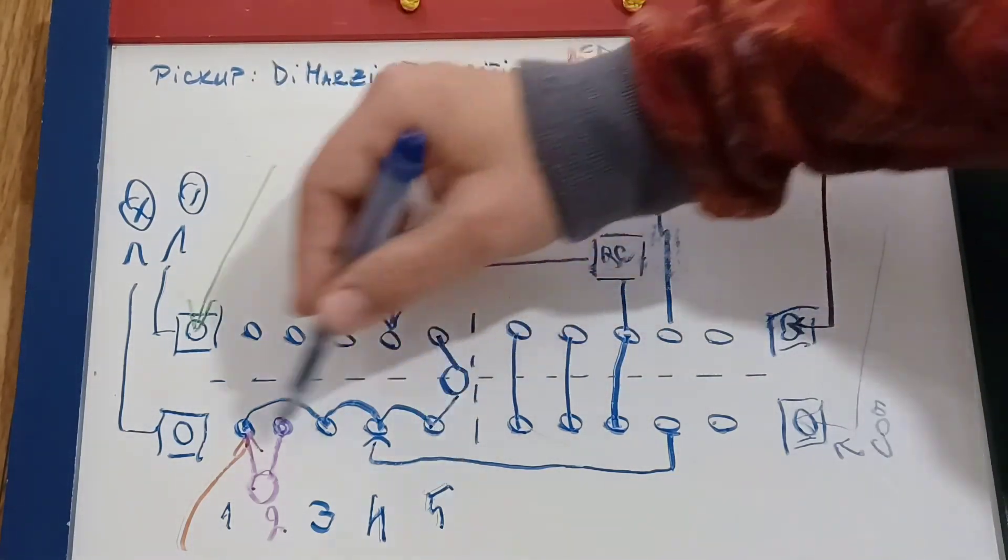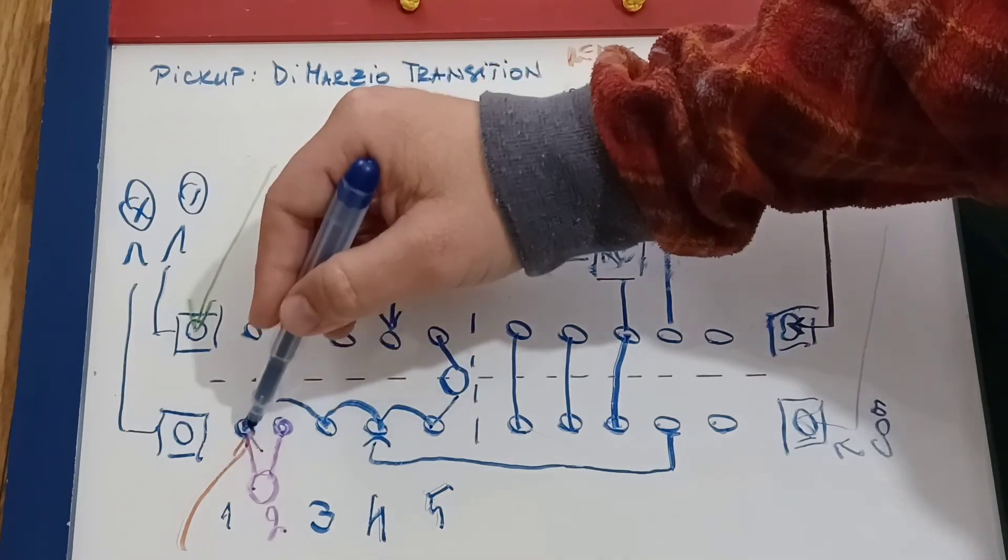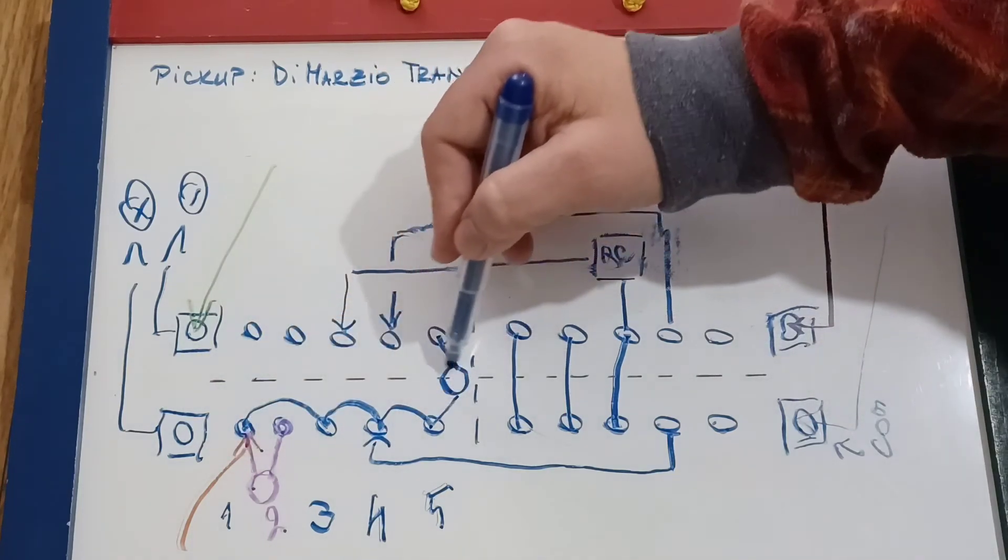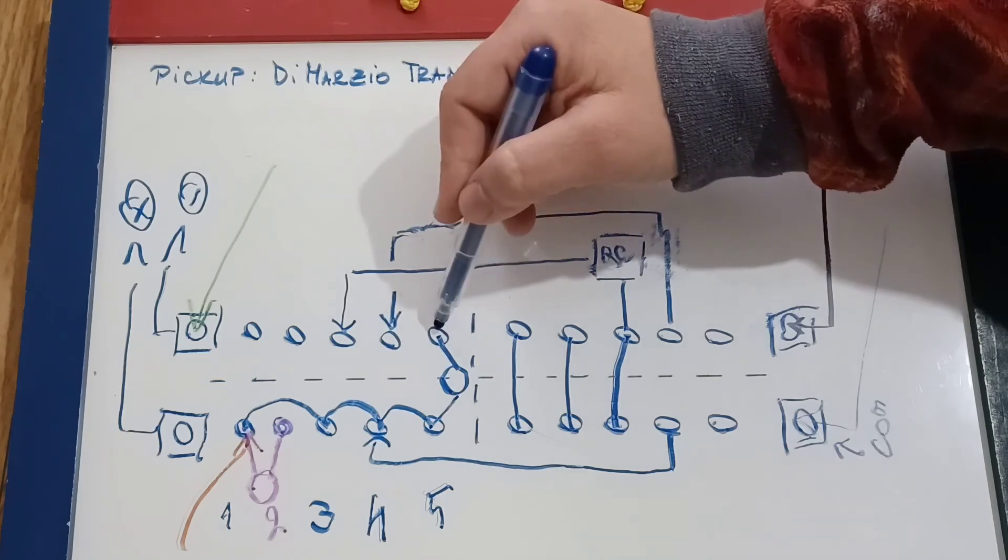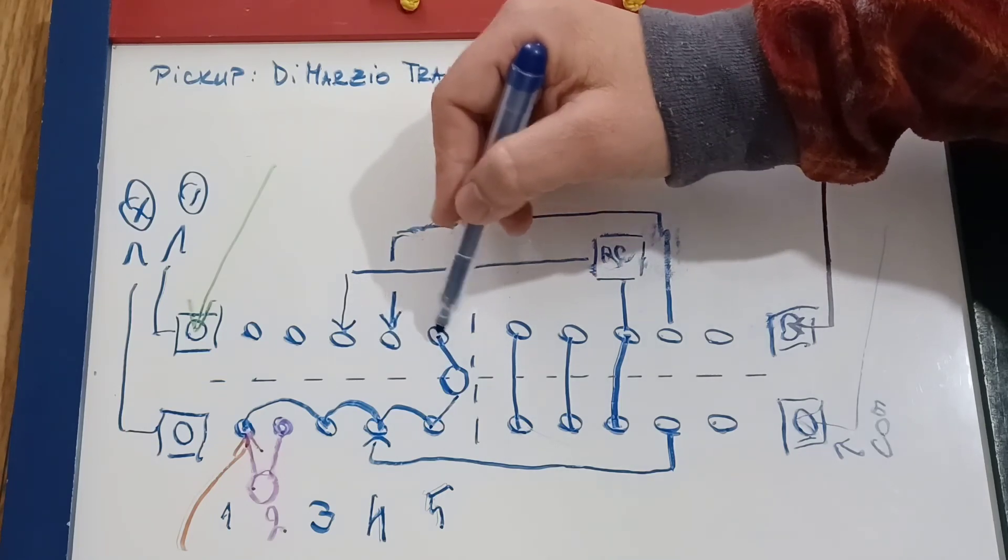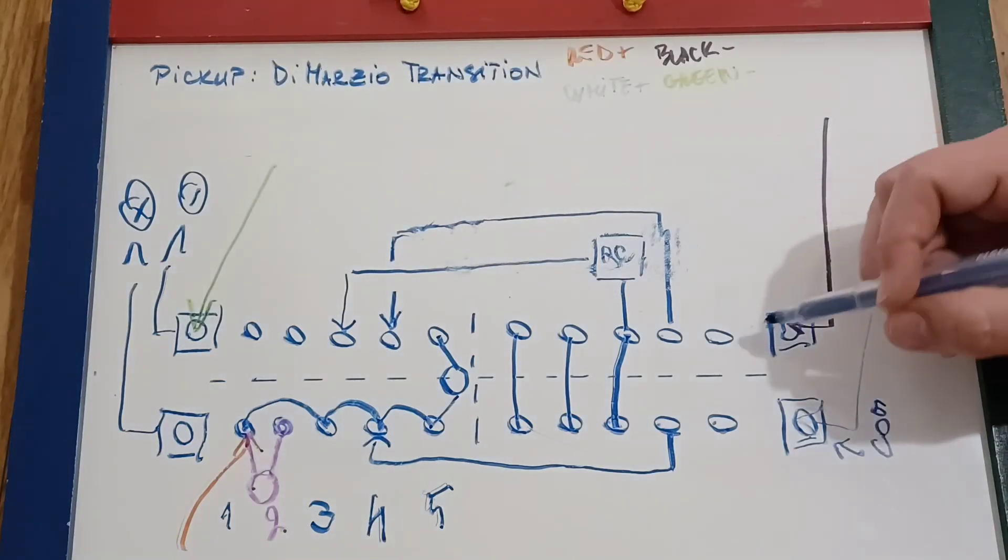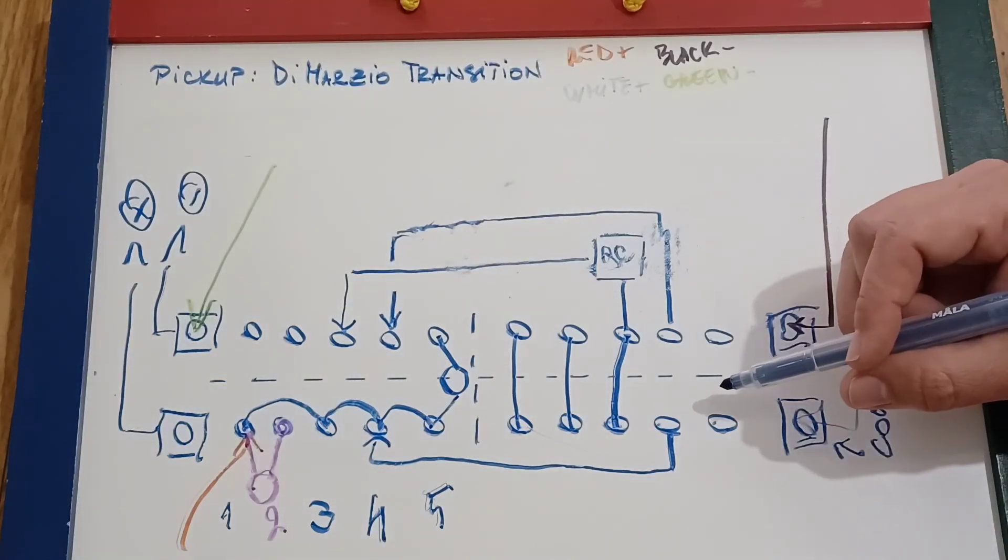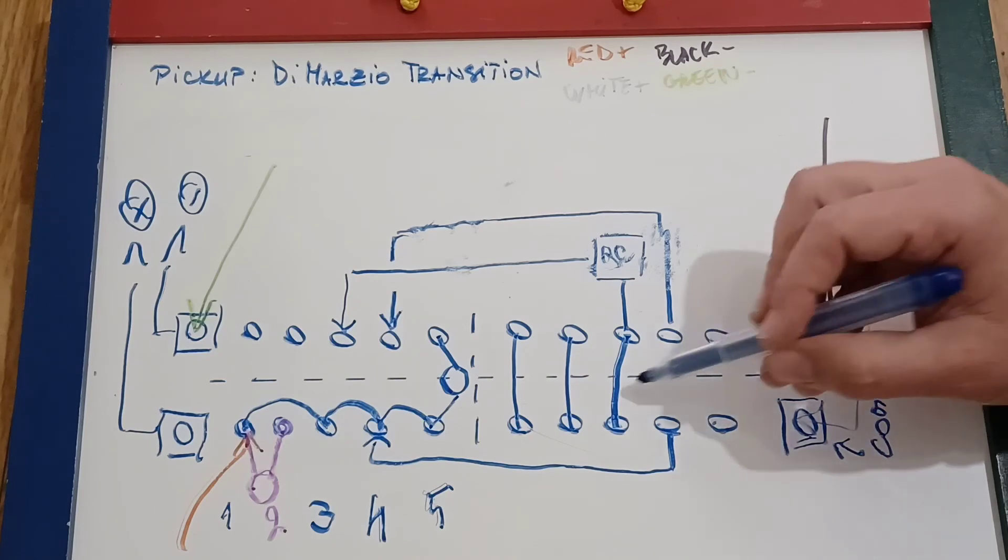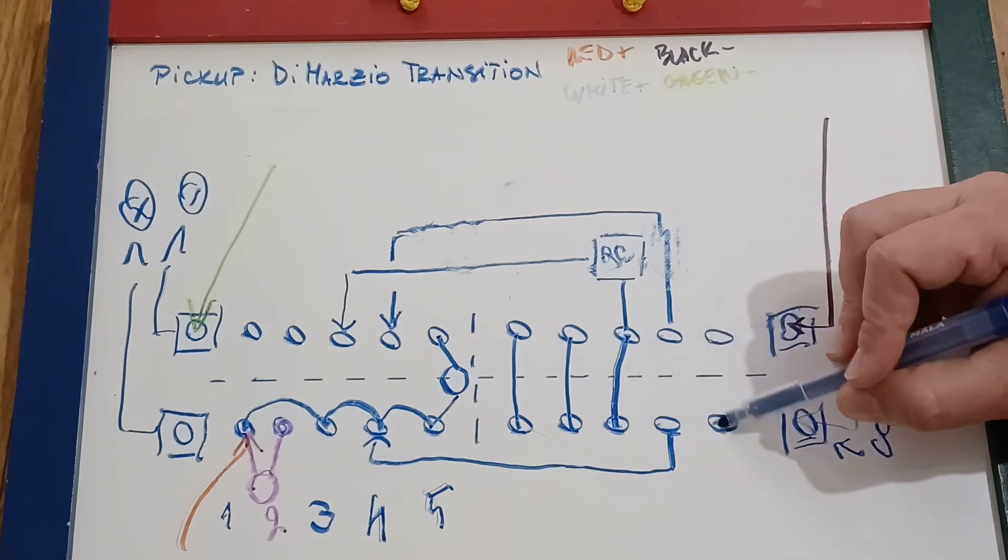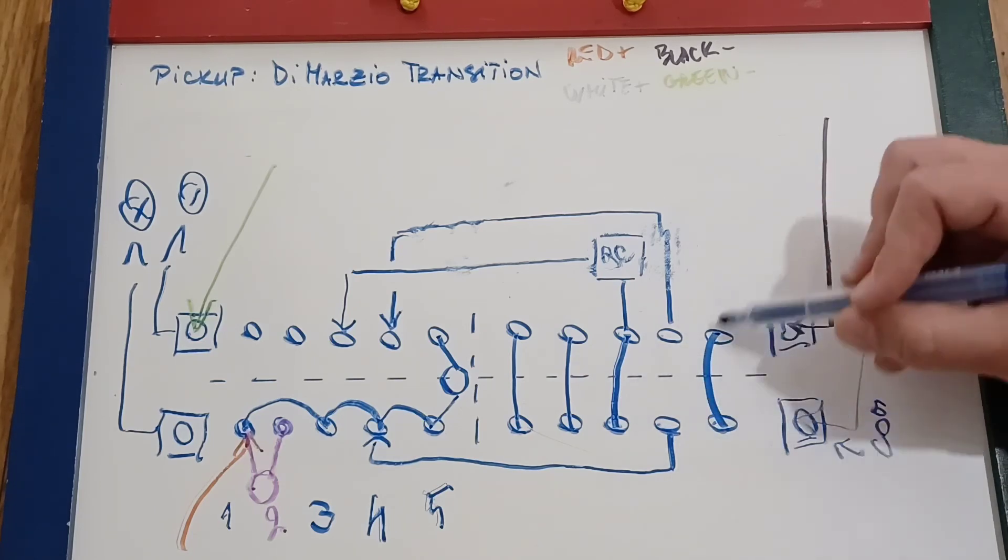So position five, the signal comes in from here, tap tap tap, it goes through the capacitor, it goes to the other side, and it goes to ground. And of course, the pickup we want it still to be in serial. So we connect these two together.